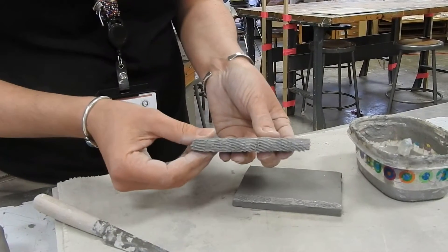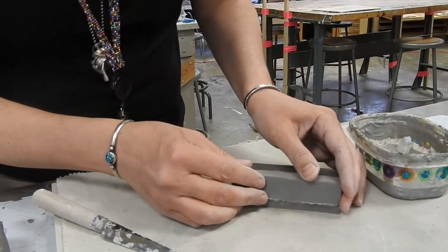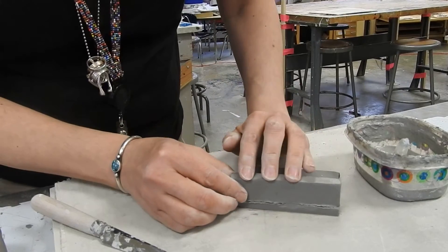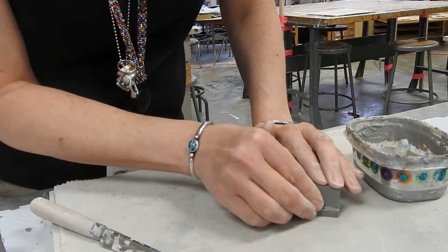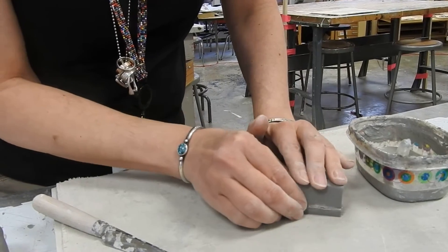And then you take those two, press them together. Pressing down gently and wiggling a little bit helps for those clay particles to mesh and blend together.